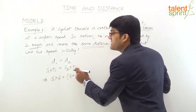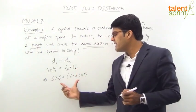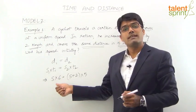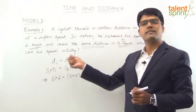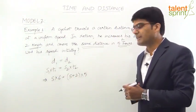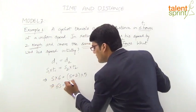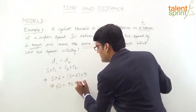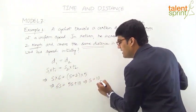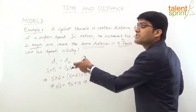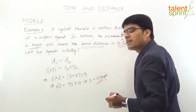The time taken in the second case is 5 hours. Now, we have one equation and one unknown value, which is S — the initial speed. If we solve this equation: 6S equals 5S plus 10. So 6S minus 5S gives S equal to 10. The initial speed was 10 kilometers per hour.